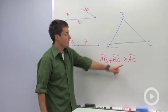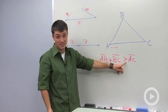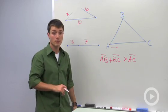So what that's saying is that going straight from one point to another is going to be shorter or less than the sum of the other two sides. You could write two other inequalities.